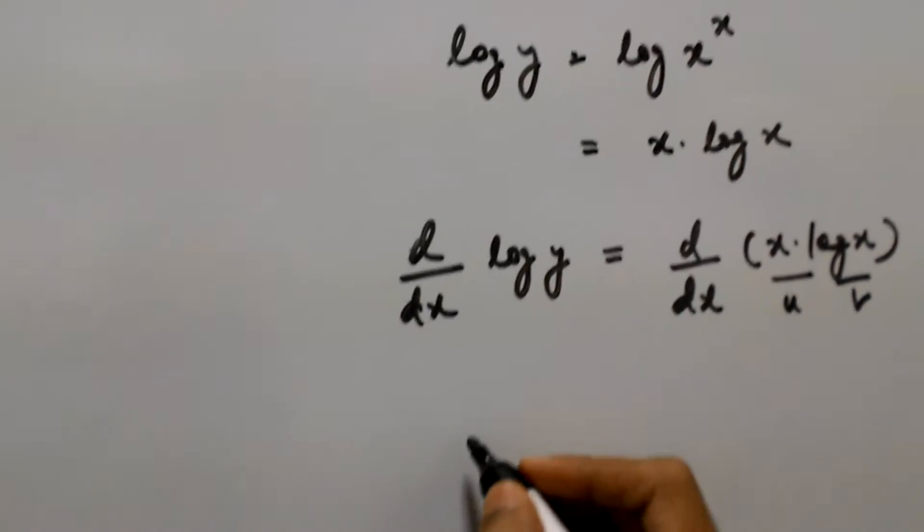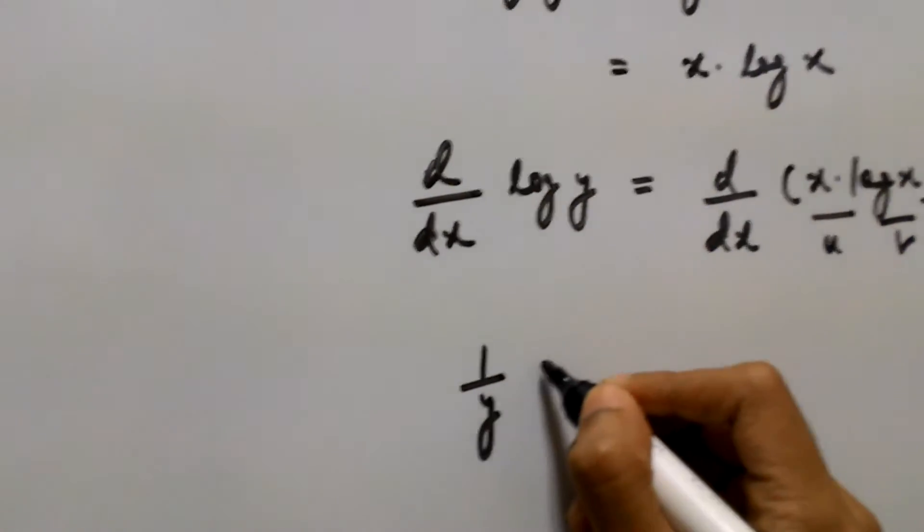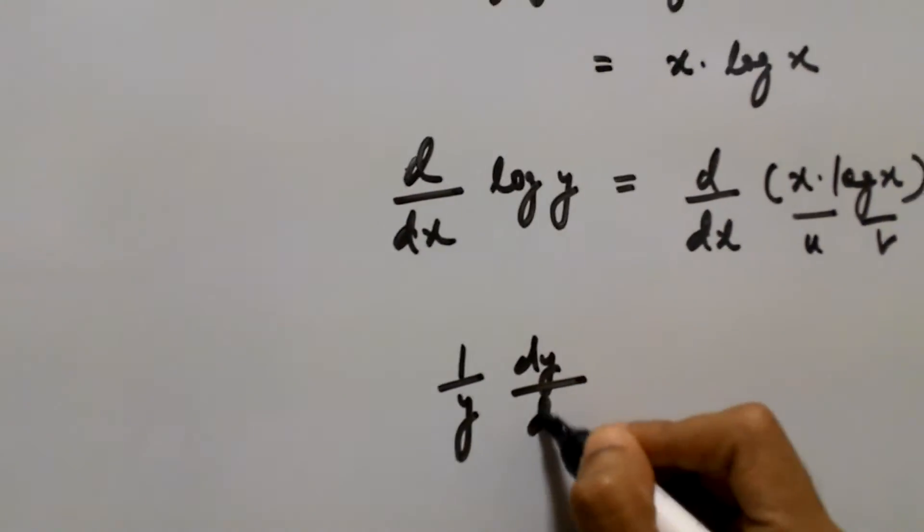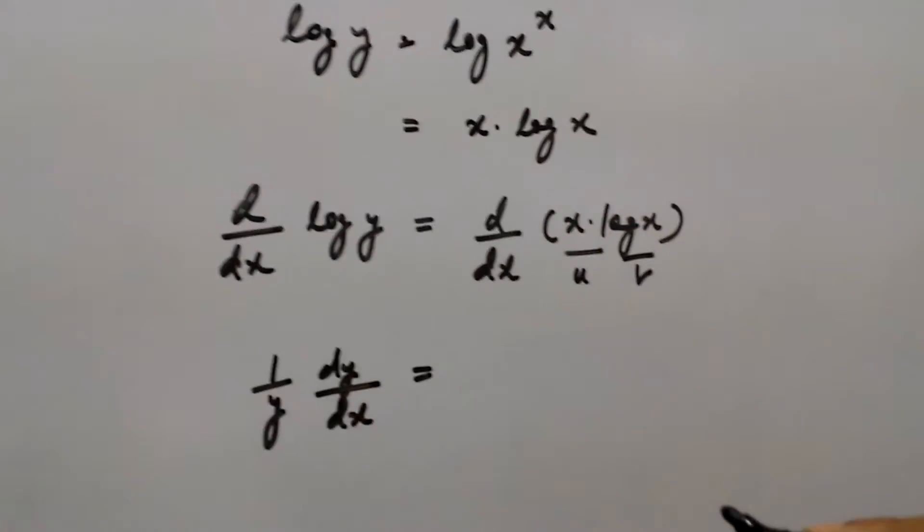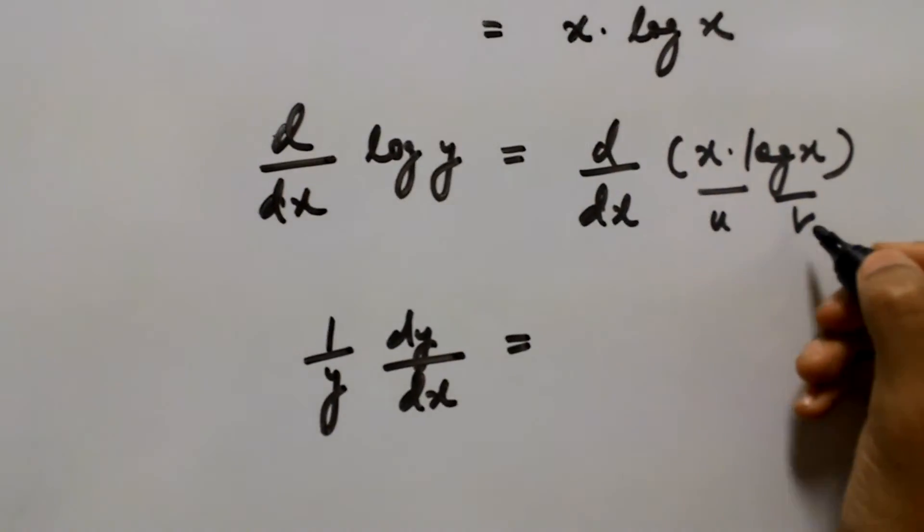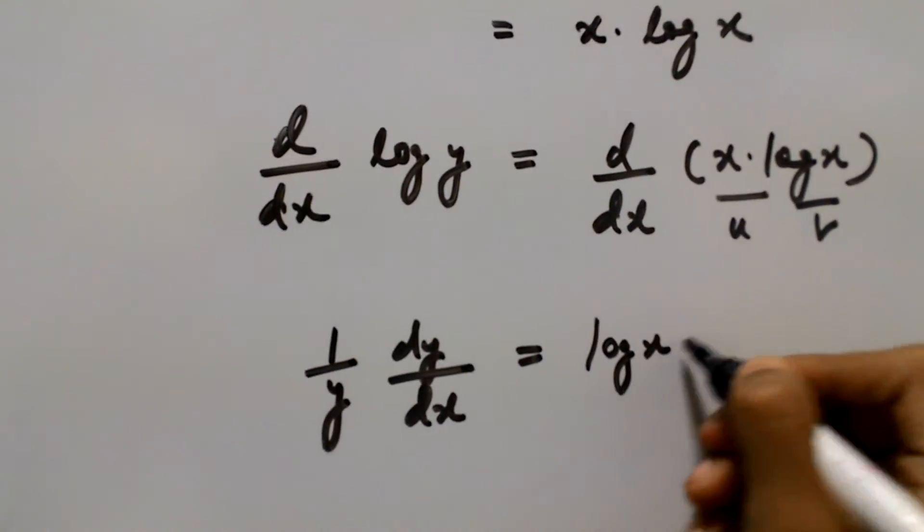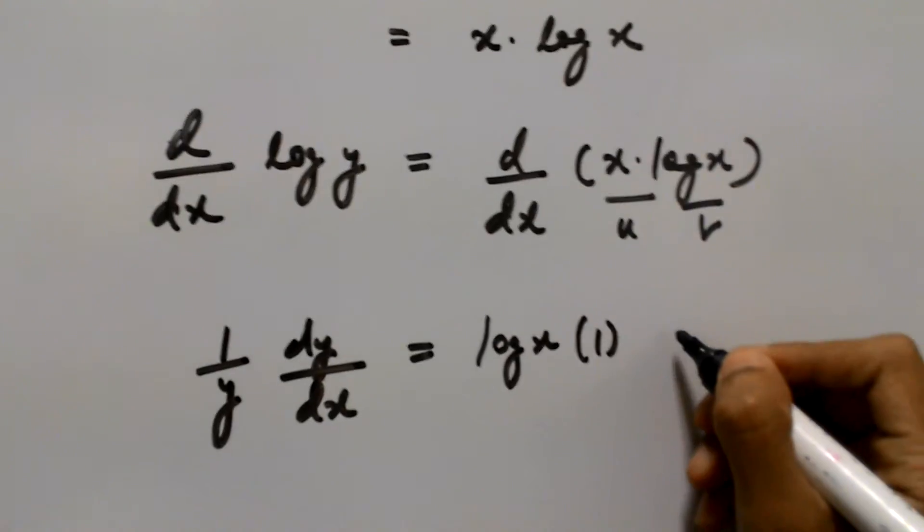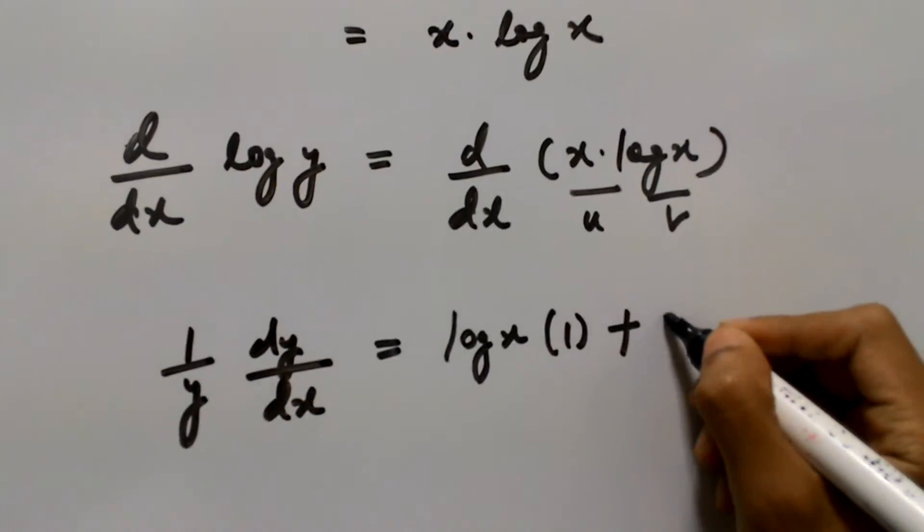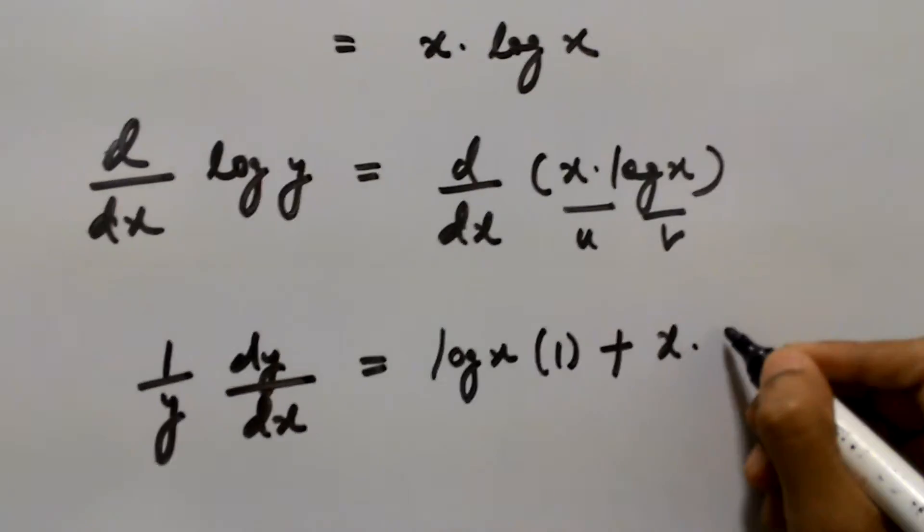What is d by dx of log y? It is one upon y dy by dx, which we can write as y dash. Now if we differentiate this, keeping the second function as constant log x, then d by dx of x is one, plus if we keep the first function as constant x, then d by dx of log x is one upon x.